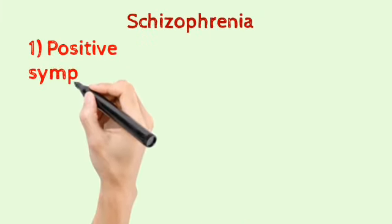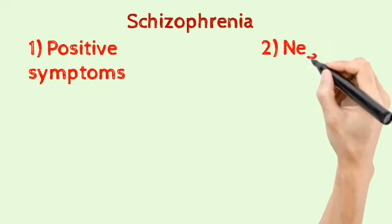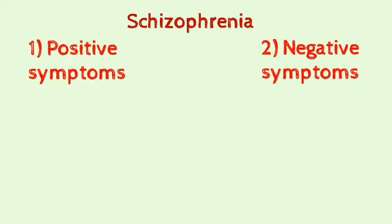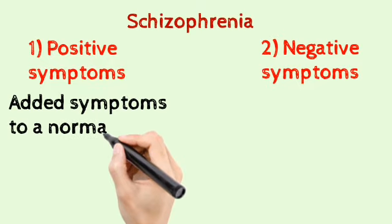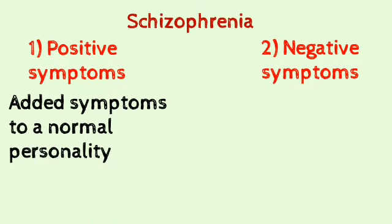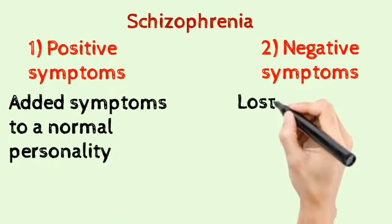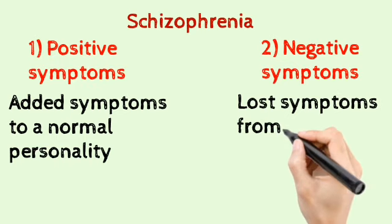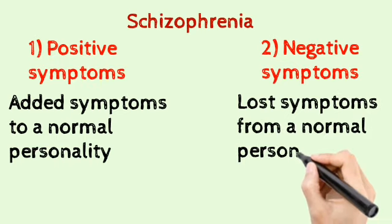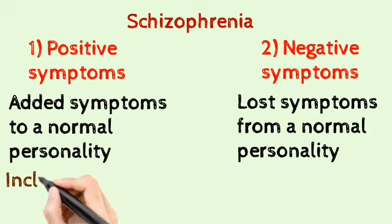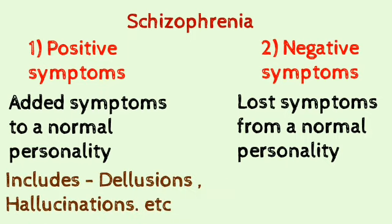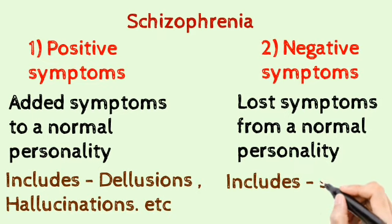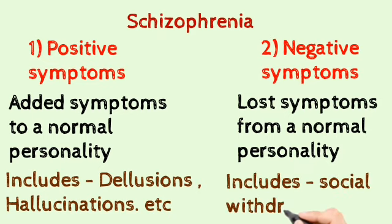Schizophrenia is a disorder characterized by both positive symptoms and negative symptoms. Positive symptoms are those which are added upon a normal personality, and negative symptoms are those which are lost from a normal personality. Positive symptoms include delusions and hallucinations; negative symptoms include social withdrawal.